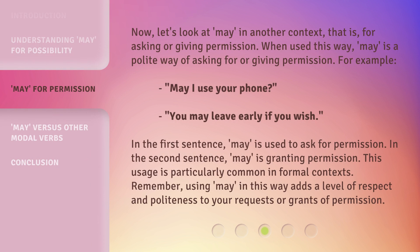Now let's look at 'may' in another context — that is, for asking or giving permission. When used this way, 'may' is a polite way of asking for or giving permission. For example: 'May I use your phone?' 'You may leave early if you wish.' In the first sentence, 'may' is used to ask for permission. In the second sentence, 'may' is granting permission. This usage is particularly common in formal contexts. Remember, using 'may' in this way adds a level of respect and politeness to your requests or grants of permission.